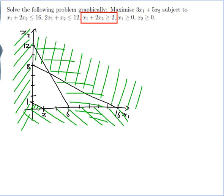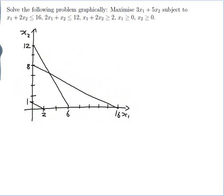Here is my convex set — the bit that's not crossed out. I'll colour it in properly and get rid of all the crossing-out so it's easier to see what's going on. I'll put dotted lines for the other edges that aren't part of the set. There's my feasible region based on all of those constraints.